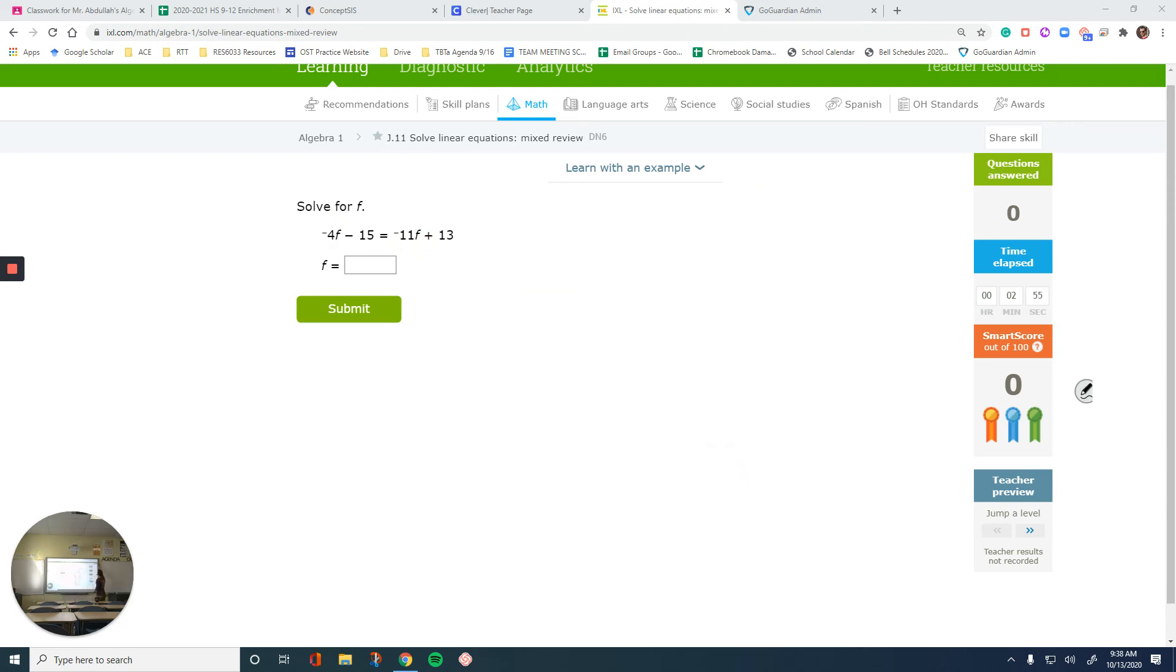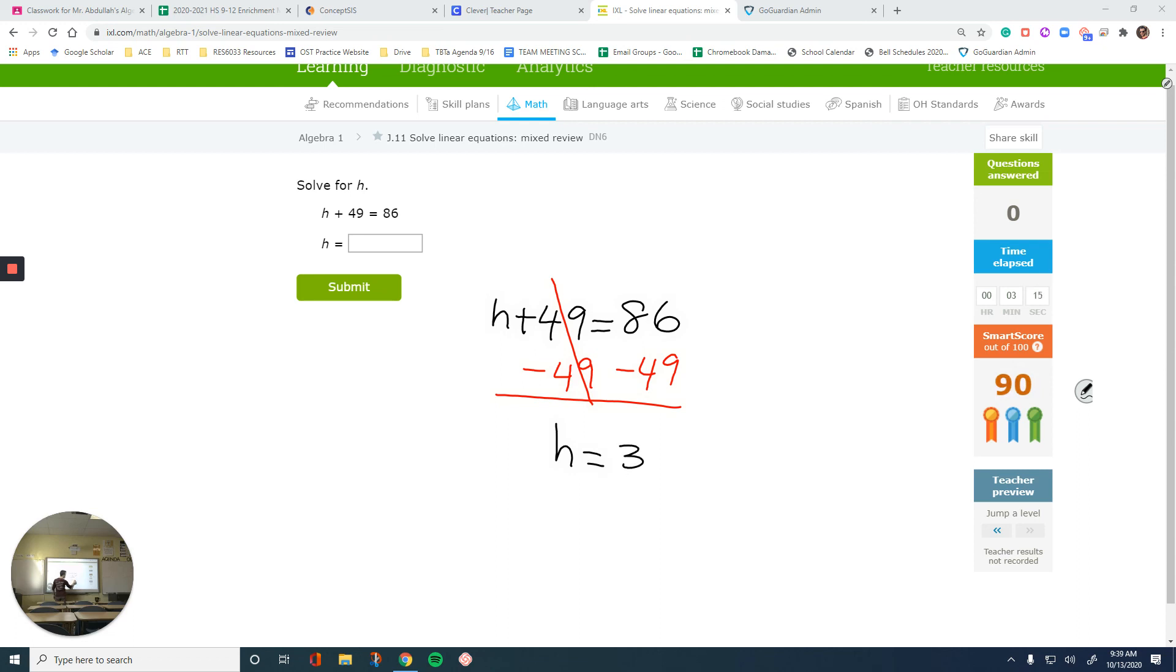Let's do one more by skipping the level to 90. Okay. h plus 49 equals 86. I don't know why this is another level. It's simpler than what we had before. So minus 49. I'm trying to get the h by itself. So h equals subtract these two. It is 37.